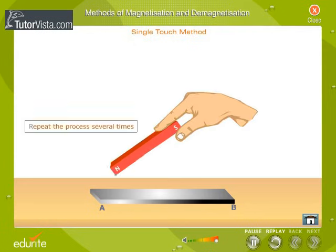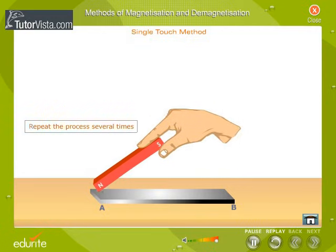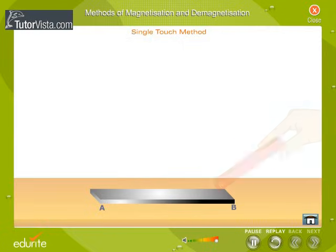The point A will get the same polarity as the pole of the magnet touching it, and the other end of the bar will attain the polarity opposite to that of the magnetizing pole.